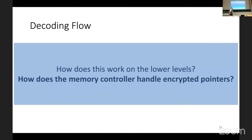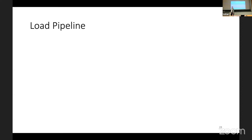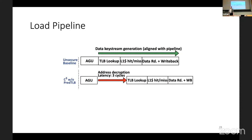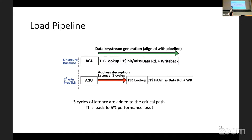Let's look at how the memory controller handles encrypted pointers, focusing on the load pipeline. In a regular unsecure baseline, the address generation unit gives us the virtual address, we look that up in the TLB, and on a cache hit we read the data and write it back. When adding cryptographic addresses, the address generation unit returns an encrypted address, so we can't look up in the TLB right away. This adds three cycles of latency directly to the critical path of the pipeline, leading to 5% performance loss.